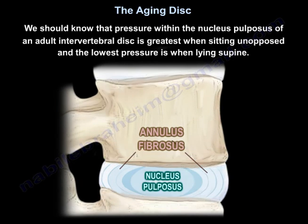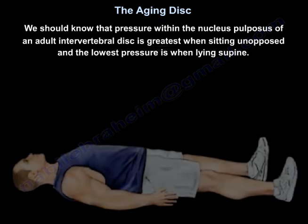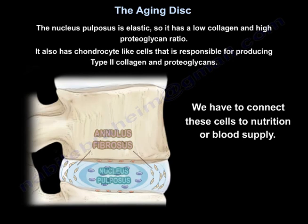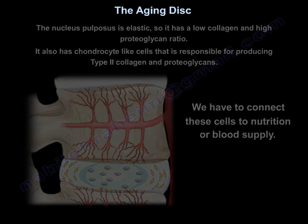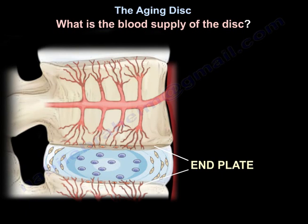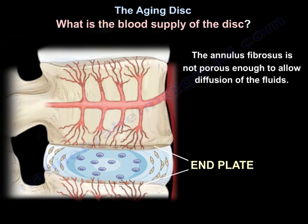Pressure within the nucleus pulposus of an adult intervertebral disc is greatest when sitting unsupported and lowest when lying supine. The nucleus pulposus is elastic, with a low collagen and high proteoglycan ratio. It also contains chondrocyte-like cells responsible for producing type 2 collagen and proteoglycans, which must be connected to nutrition or blood supply. The intervertebral disc is an avascular structure in adults; capillaries terminate at the end plate, and the nucleus pulposus receives the majority of its nutrition from diffusion from blood vessels within the end plates.